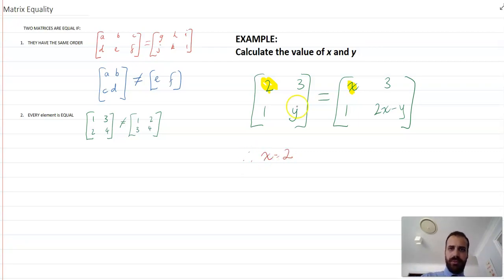The next bit's probably a little more complicated. We've got y here, we've got two x minus y here, so then we can say that y equals two x minus y.